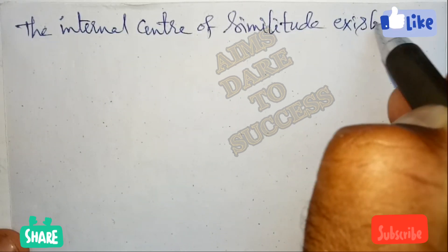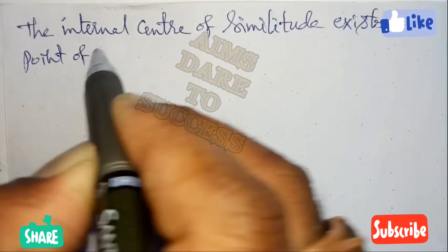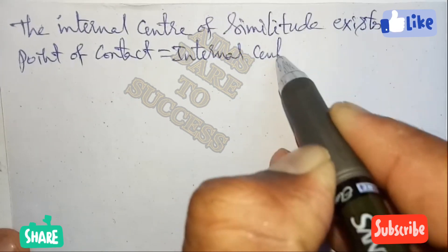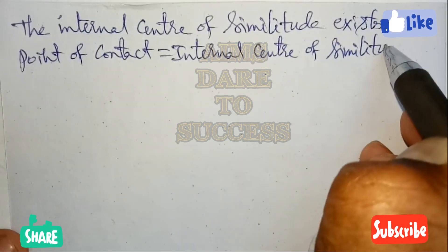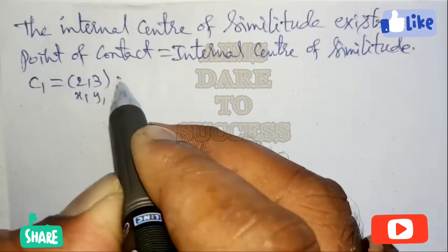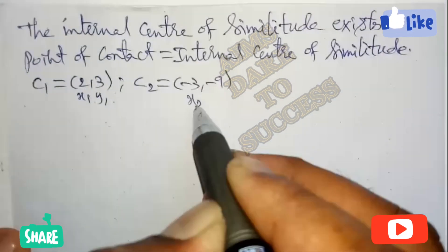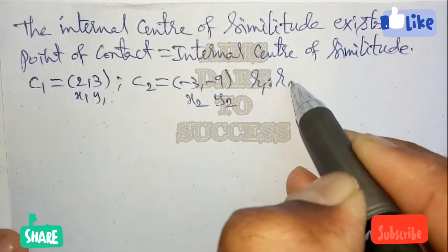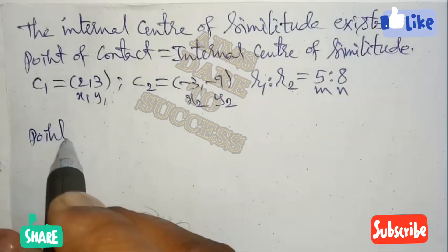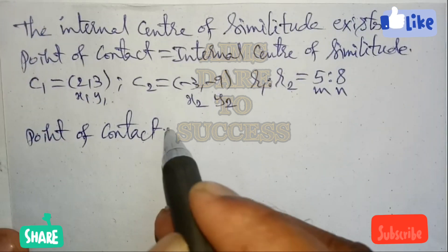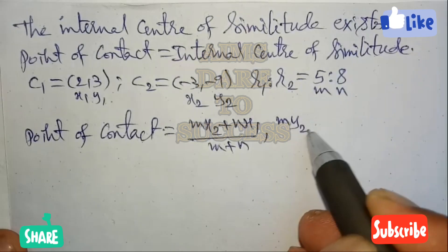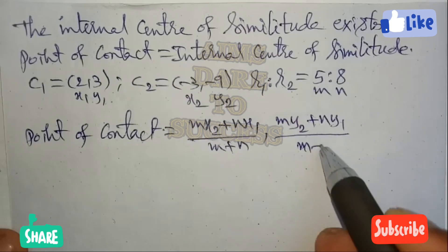Since the circles touch each other externally, the internal center of similitude exists. The point of contact is equal to the internal center of similitude. Using the section formula from 10th class: center C₁ = (2, 3) as (x₁, y₁), center C₂ = (-3, -9) as (x₂, y₂), and ratio r₁ : r₂ = 5 : 8, let m = 5 and n = 8. Internal center of similitude formula: ((mx₂ + nx₁)/(m+n), (my₂ + ny₁)/(m+n)).